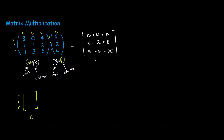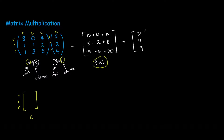The result would be a 3 by 1 matrix, using these two outer dimensions 3 and 1. We can go ahead and solve this by adding up the numbers: 15 plus 16 is 31; 5 minus 2 is 3, plus 8 is 11; negative 5 minus 6 is negative 11, plus 20 is 9. And as you can see, the final dimension is indeed a 3 by 1 — 3 rows, 1 column.